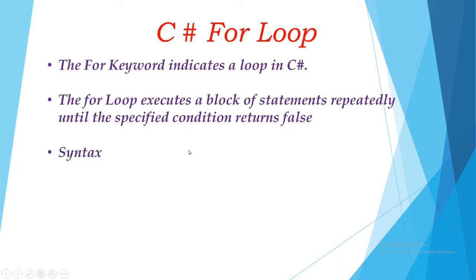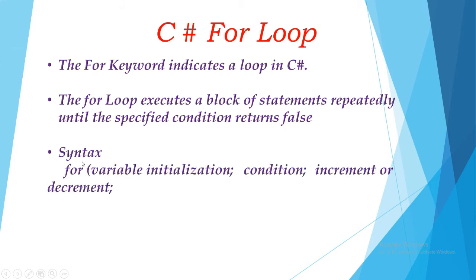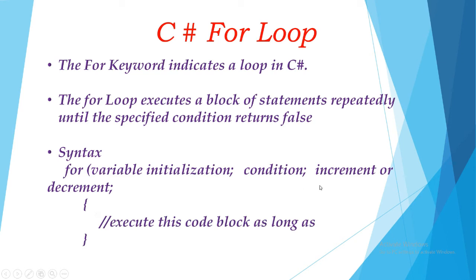Now coming to the syntax. First we write the 'for' keyword, then brackets. Inside we declare a variable — for example, an int type variable — and assign it a value; that is called initialization. You can also declare the variable outside the loop. Then comes the condition: when the condition is true it executes, otherwise it moves to increment or decrement. The statement inside the for loop runs only when the condition is true.